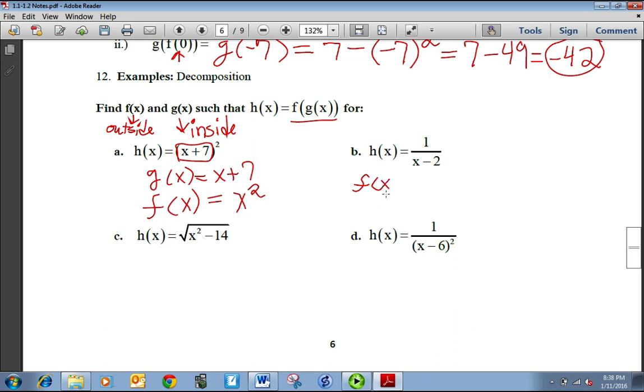So you compose it like we did on the previous example. With b, it's sometimes easier to get the inside function first. So what's on the inside is this x minus 2. And what's happening to it is we're taking the reciprocal of it. So the f of x, or the outside function, is 1 over x, so the reciprocal function. With c, we start with the inside function, which is inside the square root. It's x squared minus 14. And the outside function is just the square root of x.